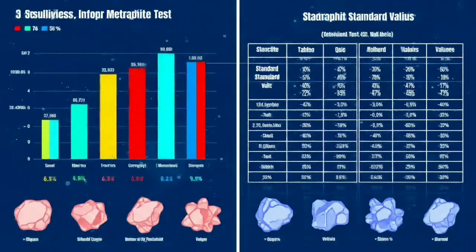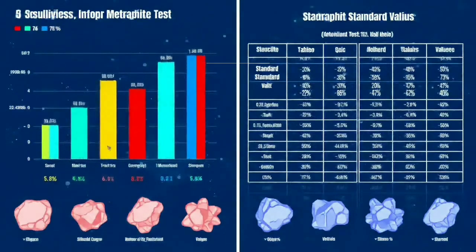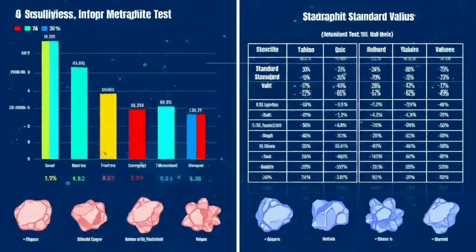Now let's compare results. Magnetic attraction, high hardness, gray streak, density between 3.5 and 7.8, and minimal acid reaction. If your sample passes all these tests, it's likely a genuine meteorite. For final confirmation, consider sending it to a professional laboratory.